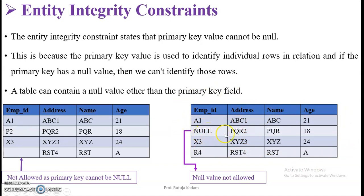In the second table, observe that the primary key value for the second row is NULL — this is also not allowed. The primary key is used to identify individual records in the relation. If the primary key has a null value, we cannot identify those records. Therefore it must not be null.